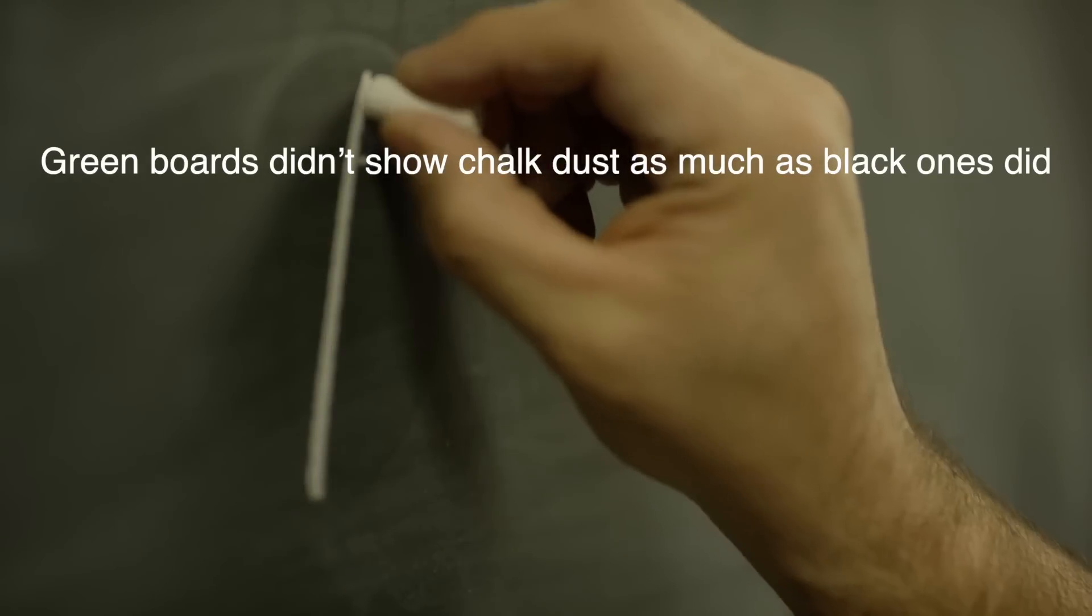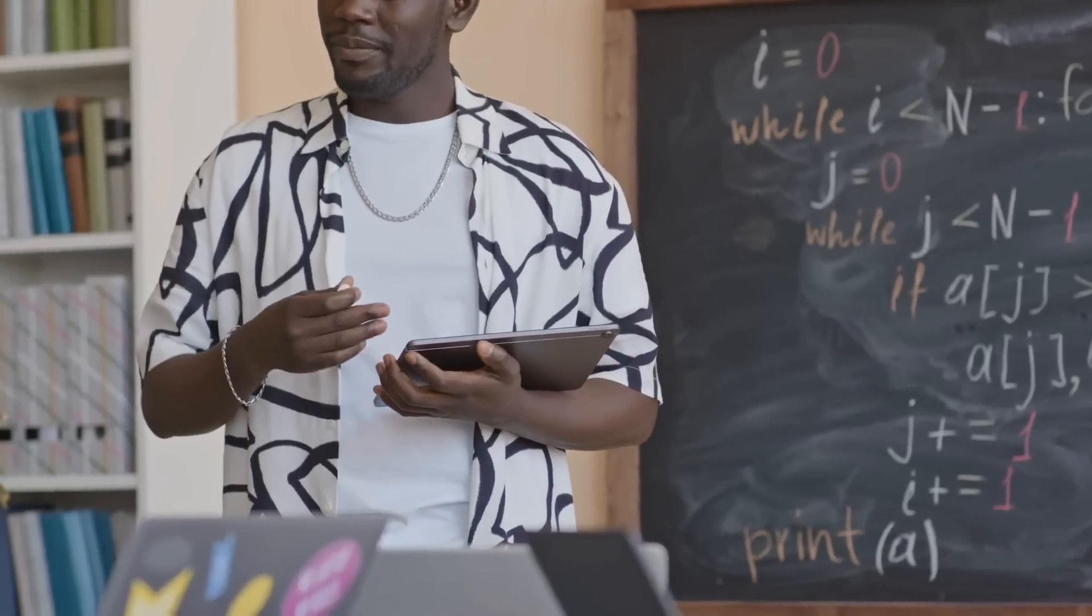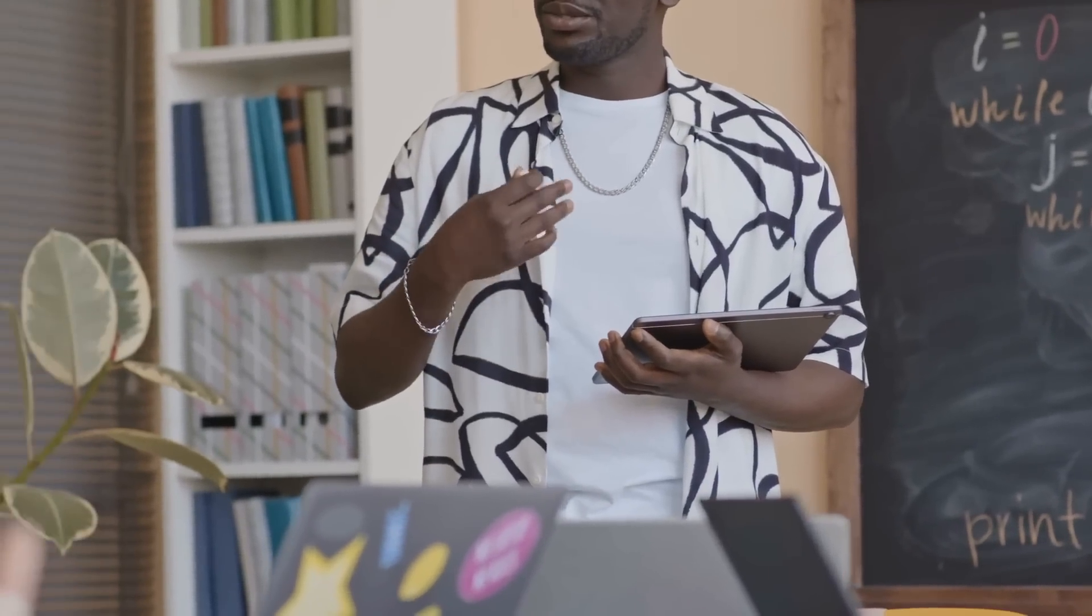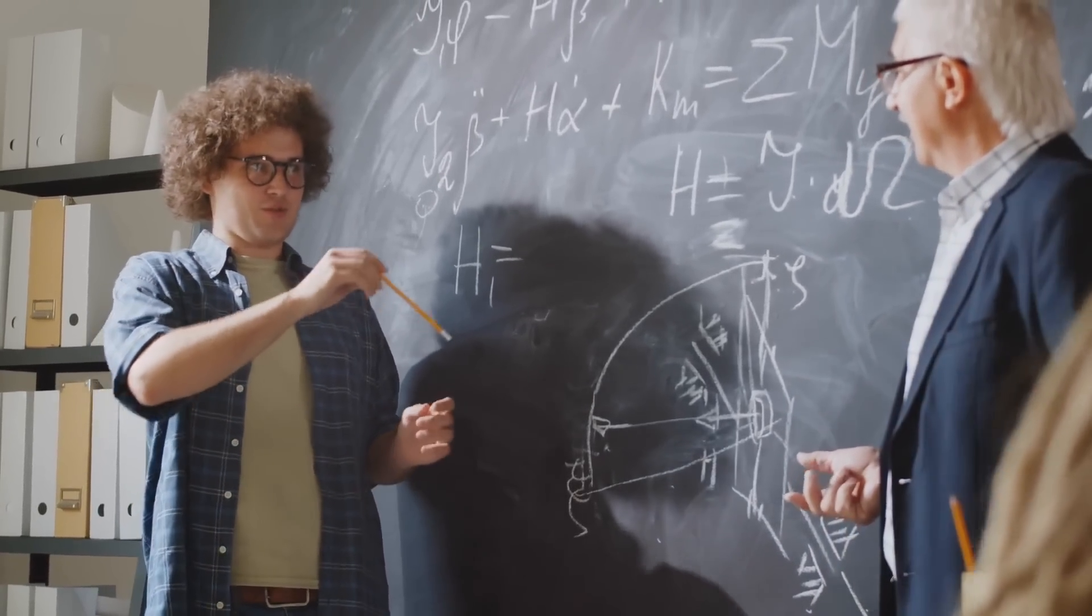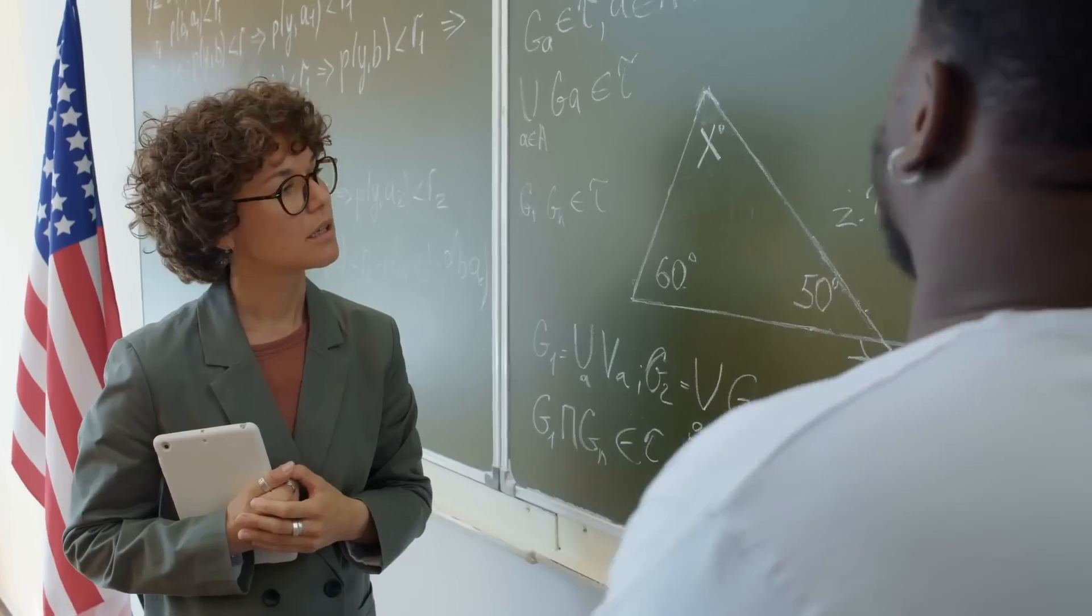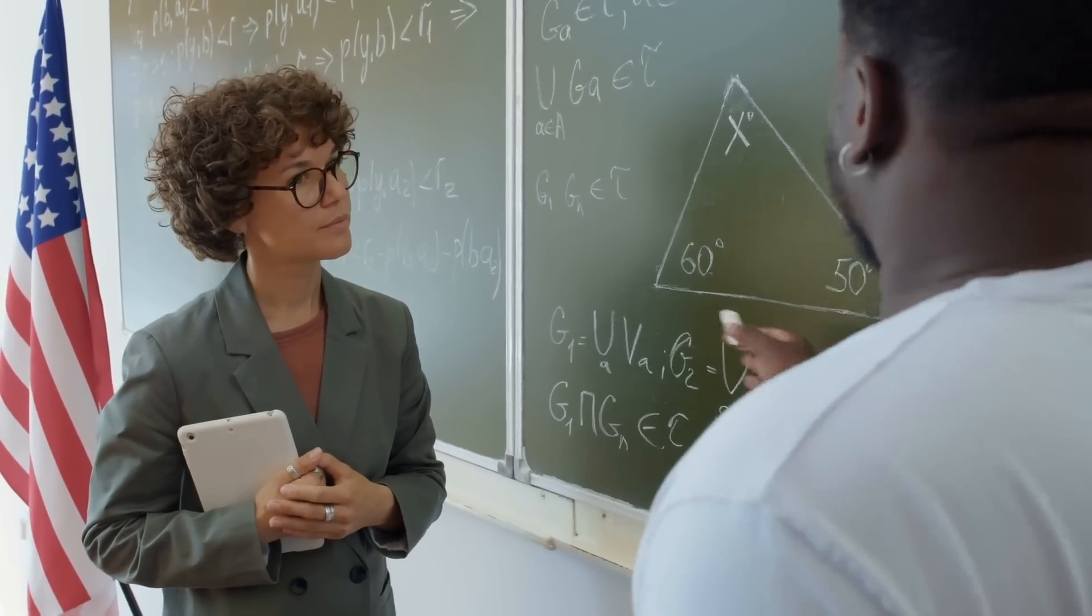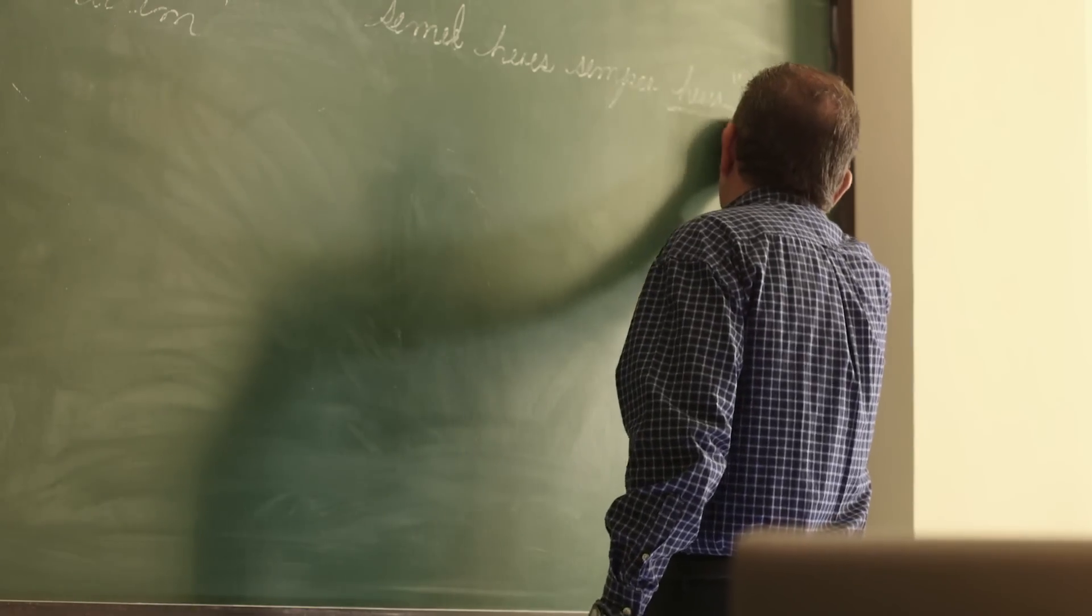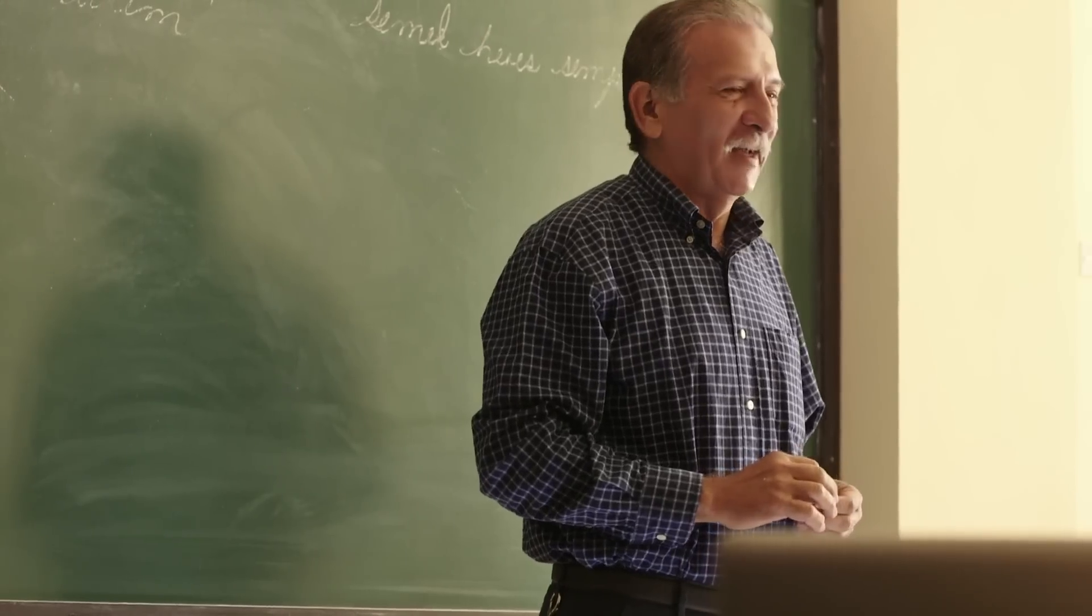Also, green boards didn't show chalk dust as much as black ones did. Chalk, as anyone who has used it knows, leaves a fine layer of dust that can smear or linger on the board, creating a ghosting effect of previous lessons. On a blackboard, these smudges were more noticeable, but on green boards, they were less prominent. This made green chalkboards appear cleaner and more professional in between lessons. Teachers liked this aspect since it allowed for quick and easy transitions between topics without having to scrub the board intensely.